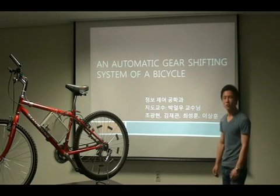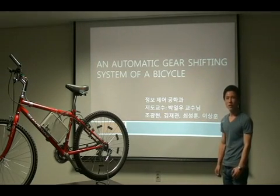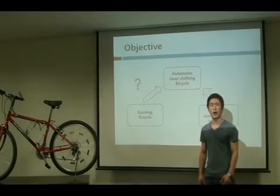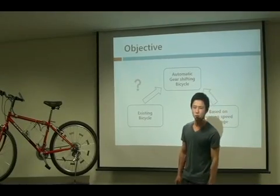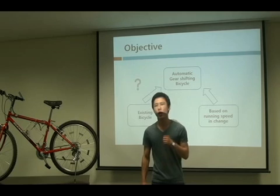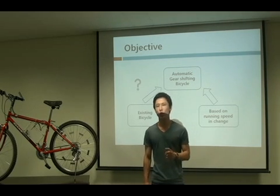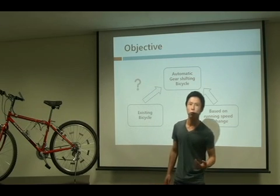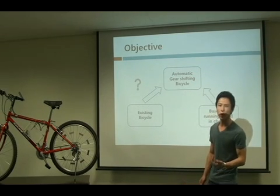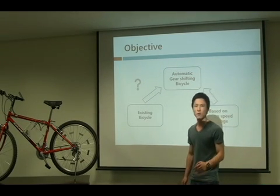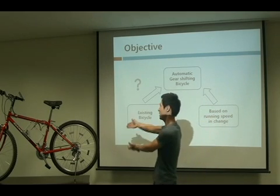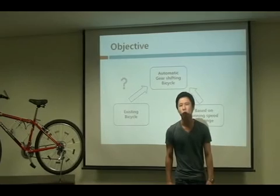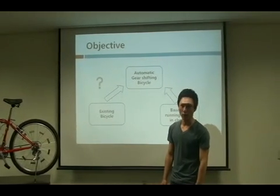Let me get this started with the objective of our project. You might have a bicycle at home. The bicycle which people have would have 21 gear combinations. We propose the project of developing an automatic bicycle gear shifter for this type of bicycle. The automatic shifter is based on the running speed of the bicycle.